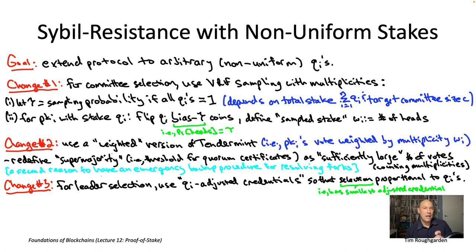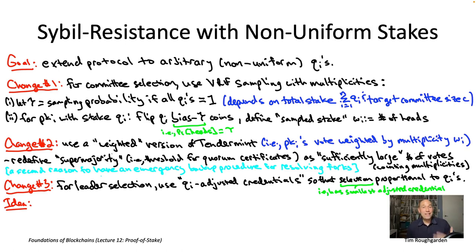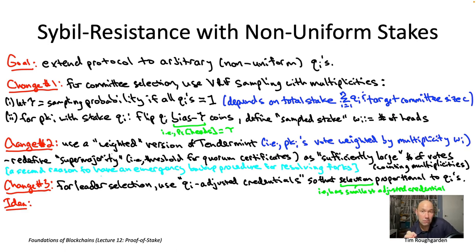At a high level, we use the same sybil-resistance approach: treat an active validator with ten staked coins as if it had registered ten times as ten sybils with different public keys with one coin each. The question is what indifference means here. For leader selection, what someone cares about is the likelihood that they will control the next leader—that the next leader is one of the public keys they own. Indifference means: the likelihood you own the public key of the next leader should be exactly the same whether you stake once with ten coins or ten times with one coin each.